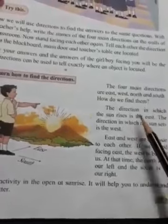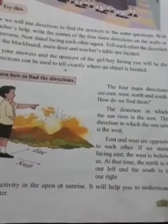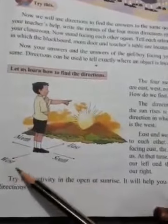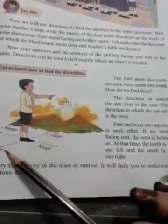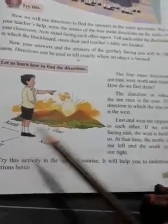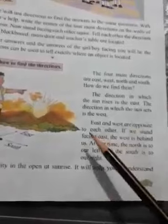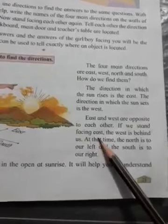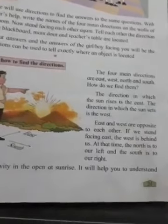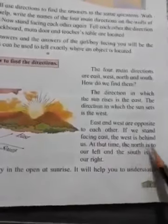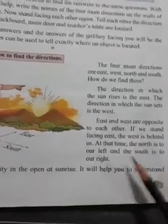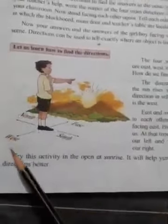The direction in which the sun rises is called East, and the direction where the sun sets is called West. East and West are opposite to each other. Now for North and South — if we stand facing the East, then West is behind us. At that time, North is to the left hand side, and South is to the right hand side.